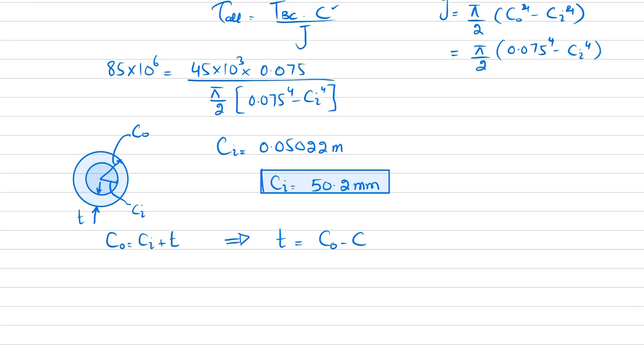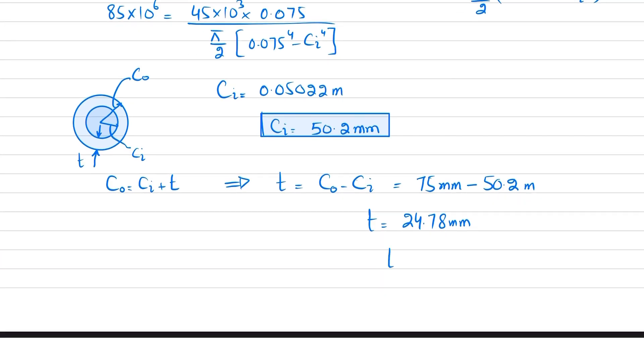From here you will get t equals c_outer minus ci. So c_outer is 75 millimeter minus ci is 50.2 millimeter. You will get thickness equal to 24.78 millimeter, and closest to millimeter we will take it as 25 millimeter. So this is the answer to our question.